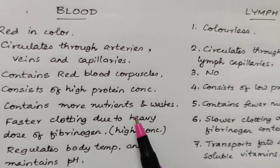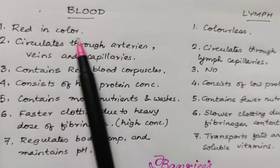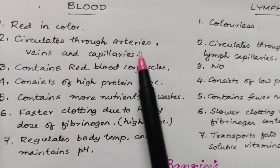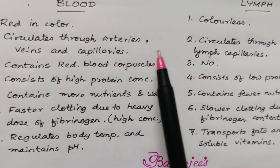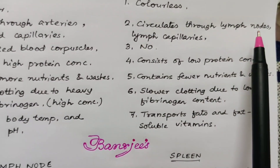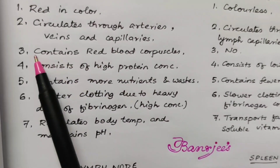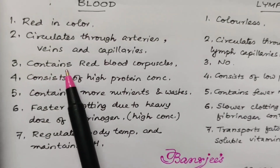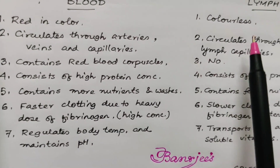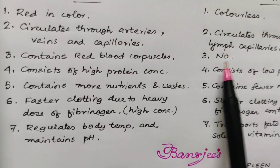Fourth comparison: blood and lymph. Blood is red in color; lymph is colorless. Blood circulates through arteries, veins, and capillaries, whereas lymph circulates through lymph vessels, lymph nodes, and capillaries. Blood contains RBCs (red blood corpuscles), whereas no RBCs are present in lymph.